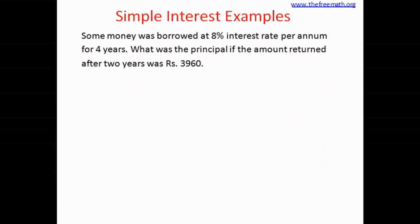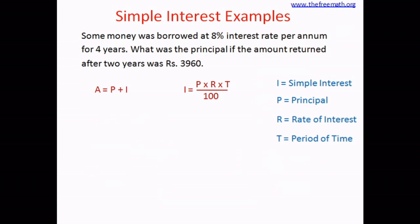Let's solve one more problem like this. Some money was borrowed at 8% interest rate per annum for 4 years. What was the principal if the amount returned after 2 years was 3,960? Again, the amount returned is given and we have to calculate the principal. The formula for amount is A equals P plus I, and simple interest is PRT divided by 100, where I, P, R, and T stand for the same values as before.